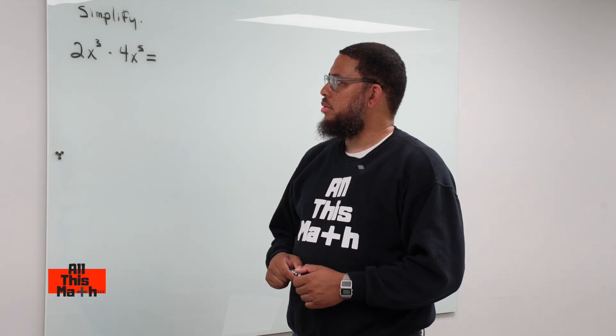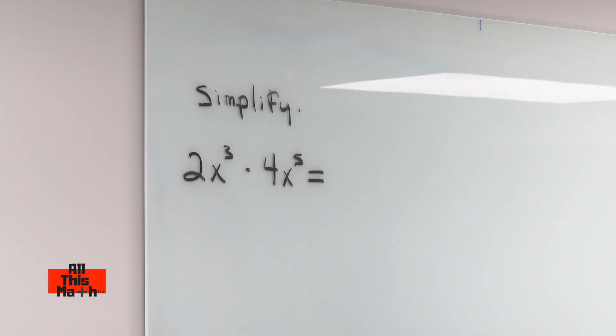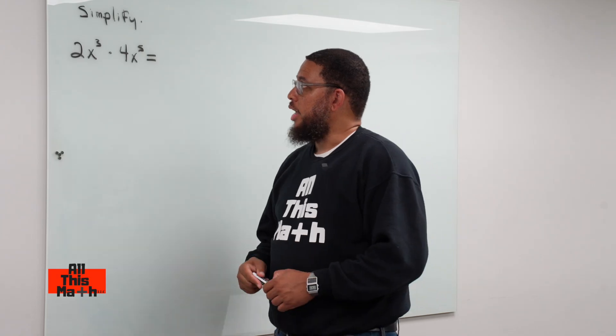So when we look at this expression, we have 2x to the third times 4x to the fifth power. We're doing some multiplication, and we have exponents.